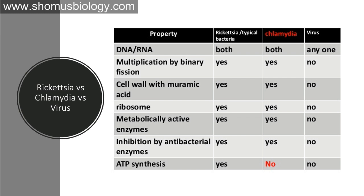I've listed a table to give an overview of the differences between Rickettsia, Chlamydia, and viruses — because all three are obligate intracellular parasites, but what is the fundamental difference? Regarding DNA or RNA: Rickettsia contains both DNA and RNA because it is a bacterium — it has DNA and can transcribe into RNA, and so can Chlamydia. However, viruses cannot have both DNA and RNA; they either have DNA or RNA. That is a major difference.